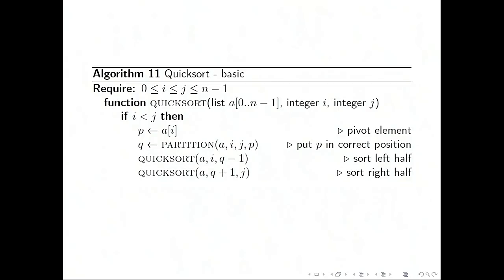Then once p is in its correct position you have a left and a right sublist. One of them starts at i and goes up to q-1 where q is the position that the pivot element ends up in, the correct position.